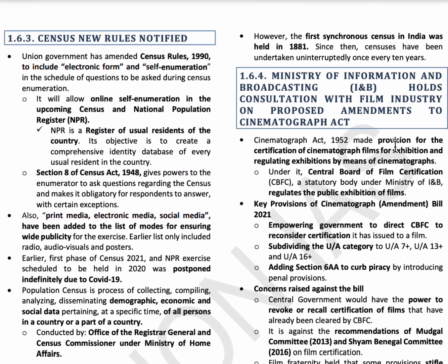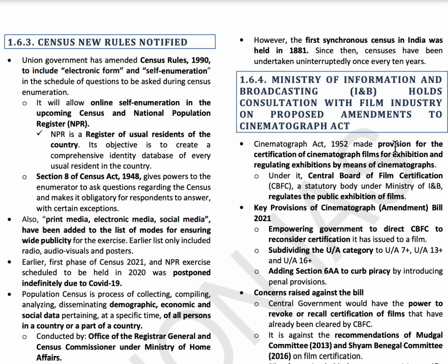The next topic is Census Rules. The first synchronous census was held in 1881, and since then every 10 years a census is conducted. The 2020 census was postponed due to the pandemic. As per new rules, census will be updated digitally through electronic forms and self-enumeration. The National Population Register (NPR) will also be maintained to register residents of the country.